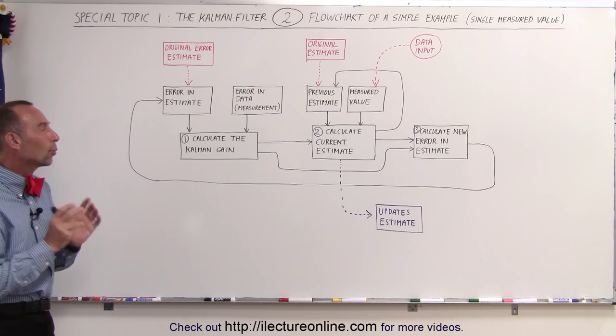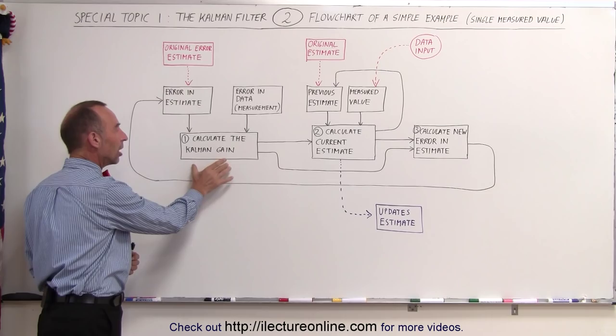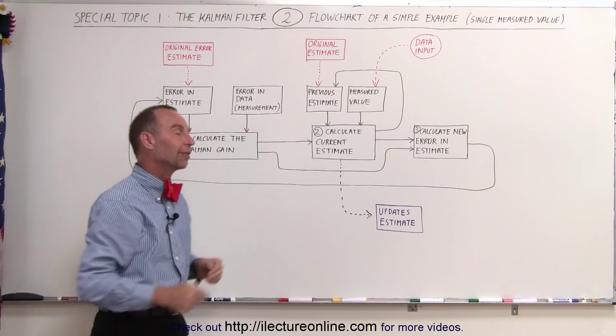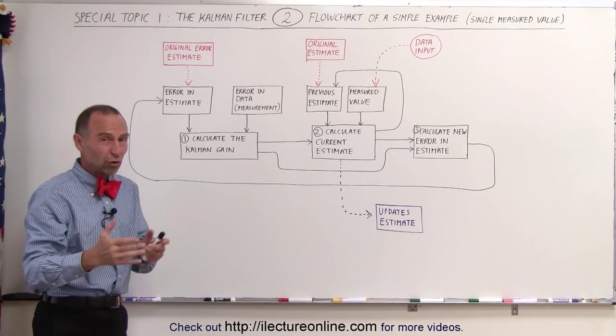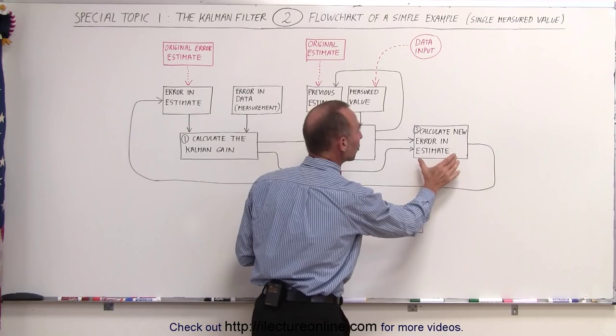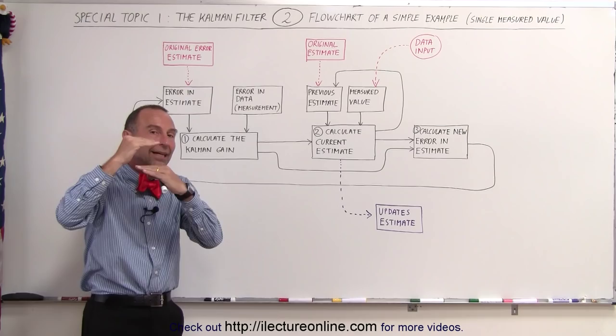There are three main equations, or three main calculations, that need to be done. One, we need to calculate the Kalman gain. These three calculations are iterative — they have to happen over and over again for the estimate to zoom in to the actual correct value. Secondly, we have to calculate the current estimate, updating it each time. And finally, we have to recalculate the new error in the estimate, because each estimate comes with a predicted amount of error.